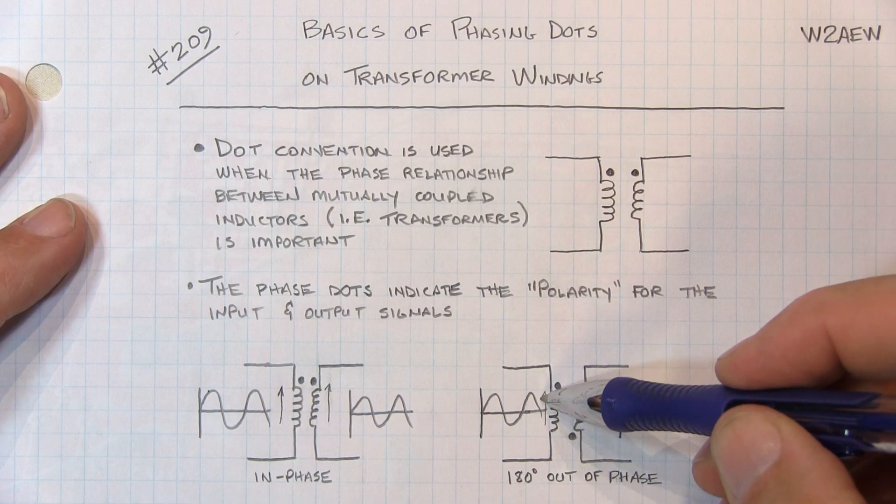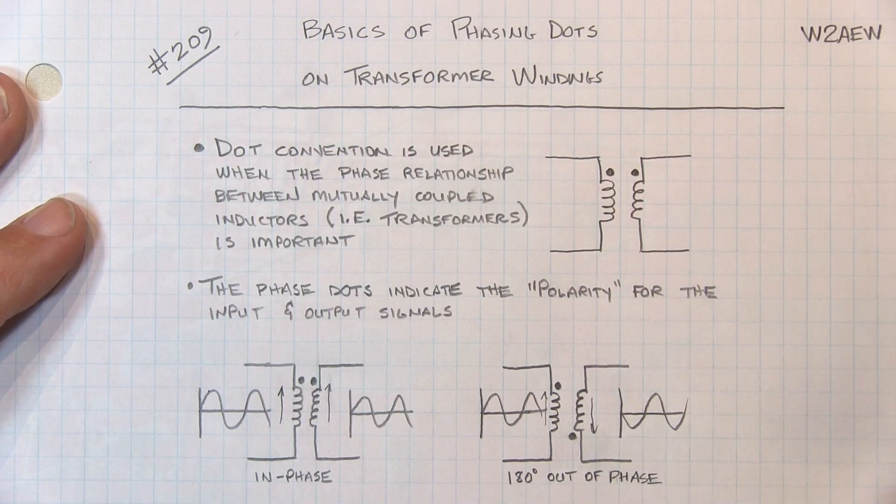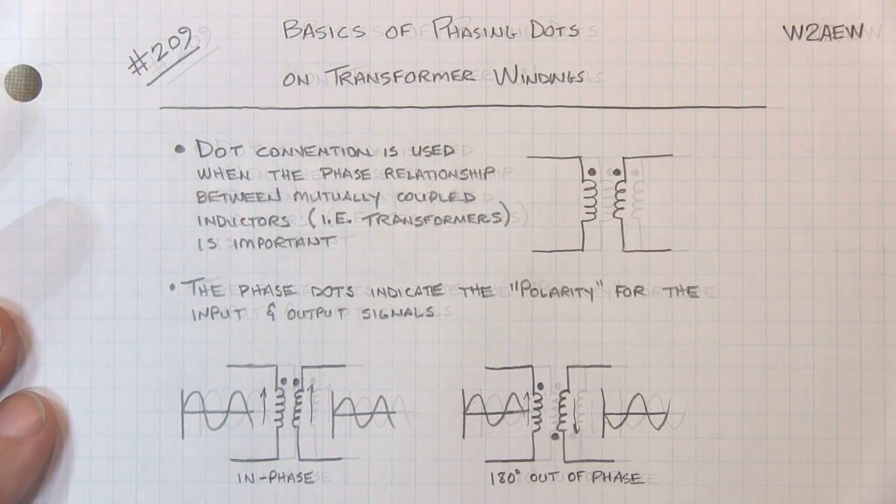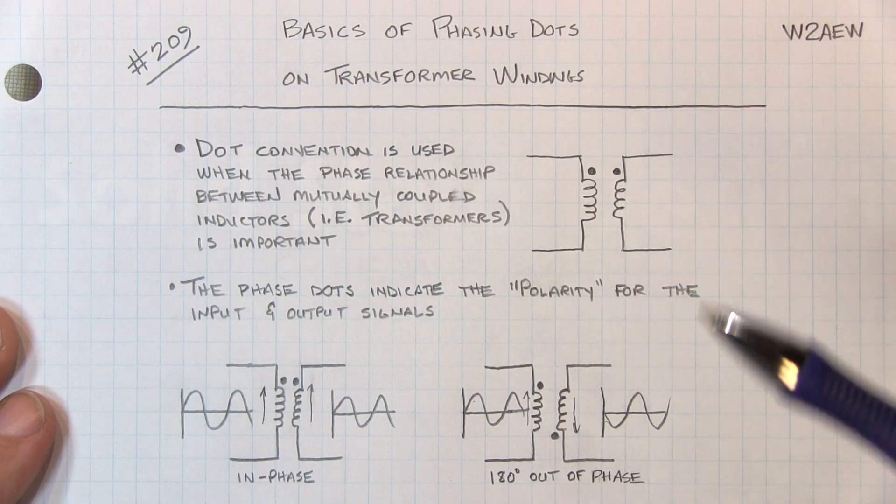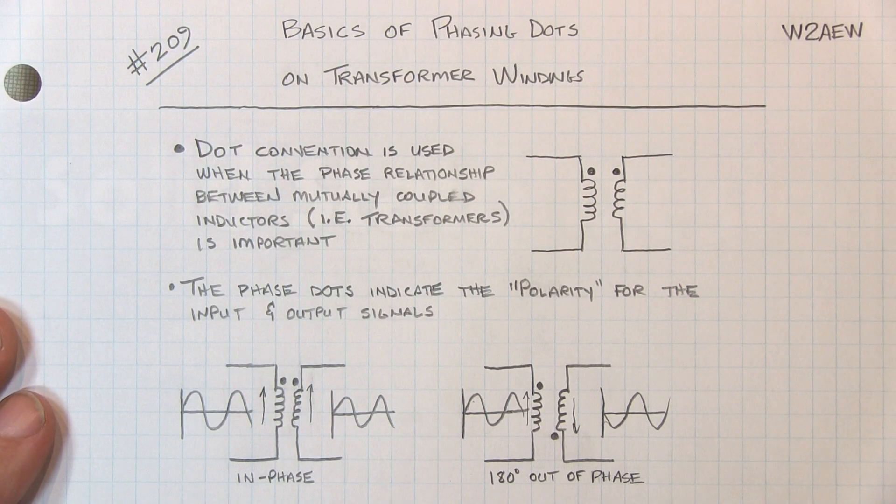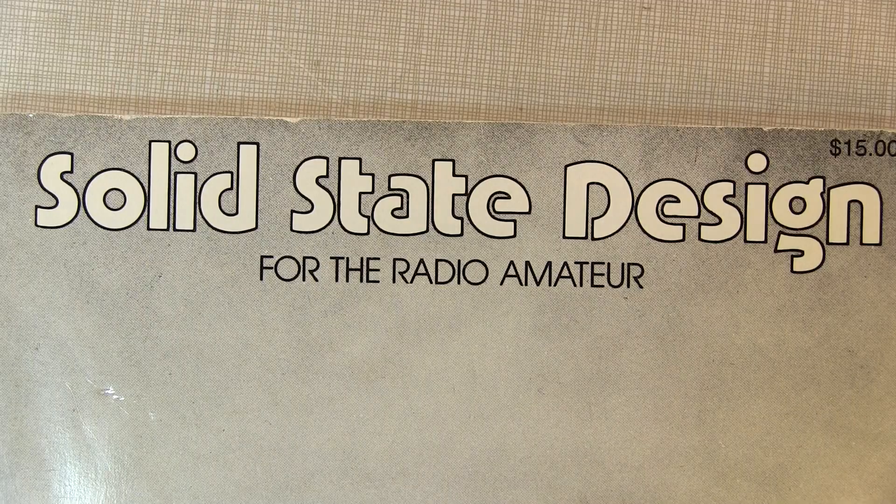So this voltage is going up that way, this voltage is coming down that way towards the dot, at the very beginning of the waveforms here. Now, as I mentioned, sometimes the phase matters and sometimes it doesn't. Let me just show you an example or two of what I'm talking about.